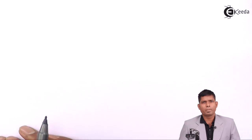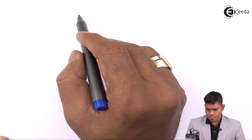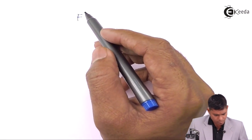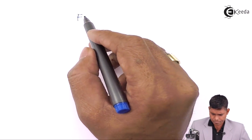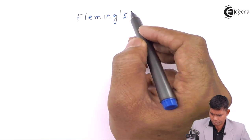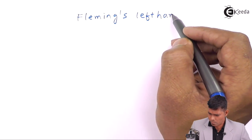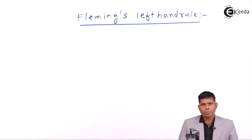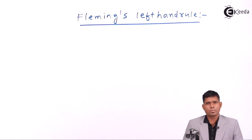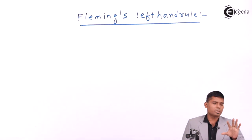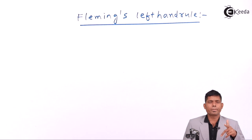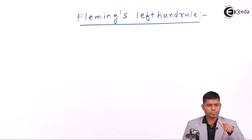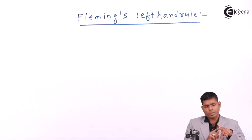Today we will talk about Fleming's left hand rule. You take your left hand and keep the first three fingers mutually perpendicular to each other like this. The first finger, this is the second finger, and this is the thumb.